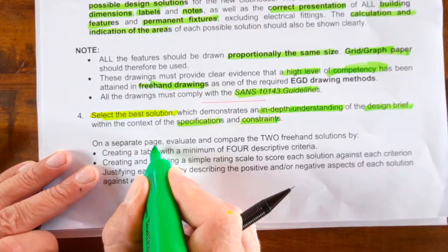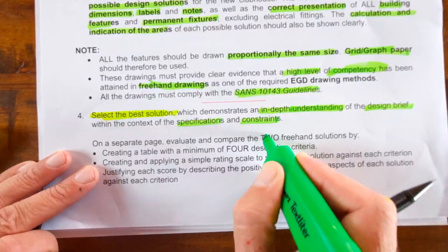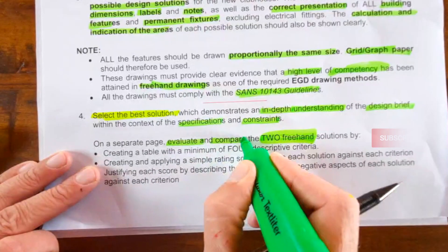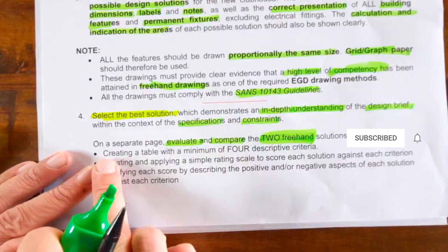On a separate page, evaluate and compare the two freehand solutions that you've come up with. Evaluate and compare, keywords here. How do you do it?